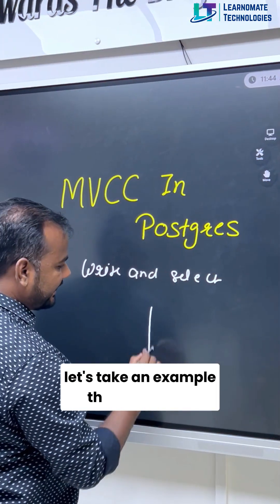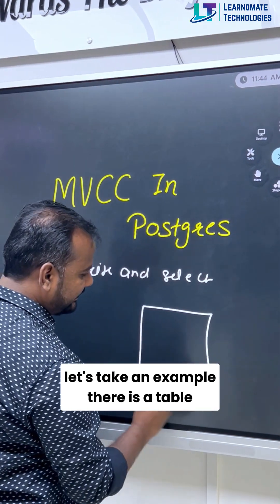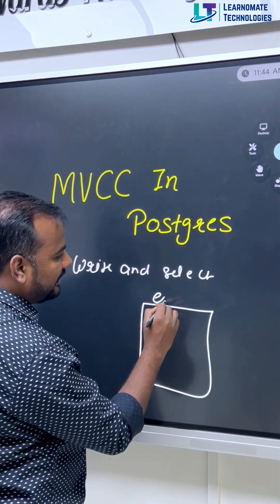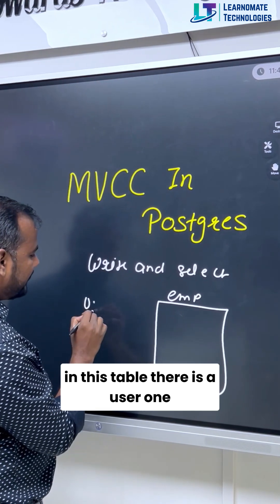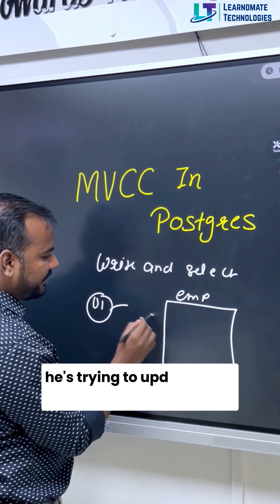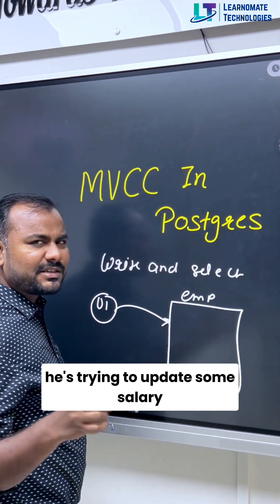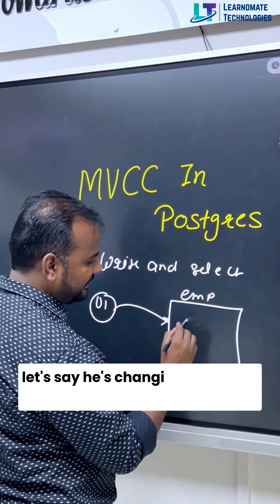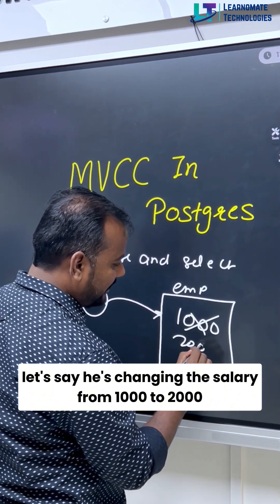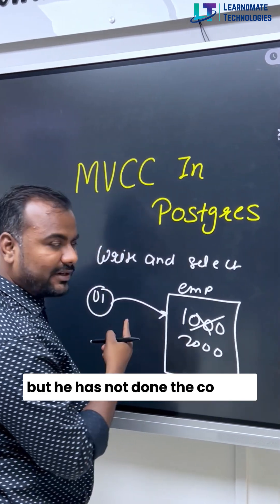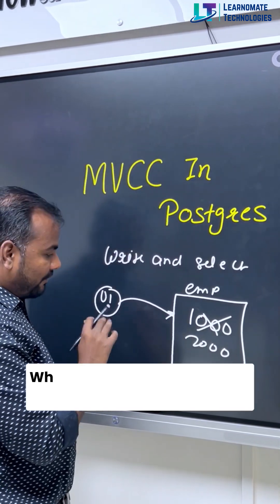Let's take an example. There is a table. In this table, there is a user one. He is trying to update some salary — let's say he is changing the salary from 1000 to 2000. But he has not done the commit.